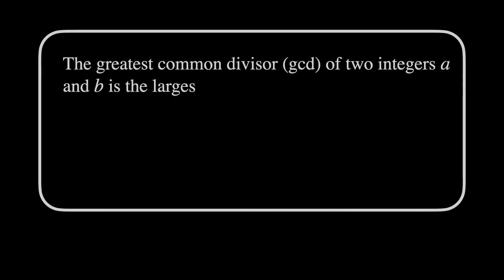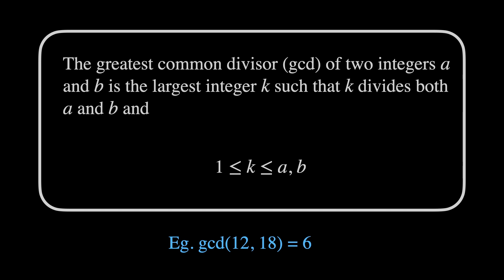The greatest common divisor or GCD of two integers A and B is the largest integer K such that K divides both A and B and K is between 1 and A and B. For example, the greatest common divisor of 12 and 18 is 6 as there are no larger numbers than 6 which divide both 12 and 18.